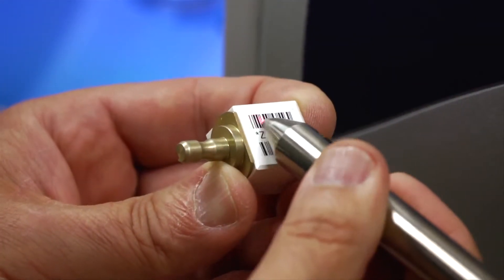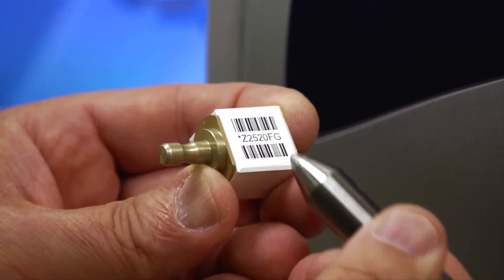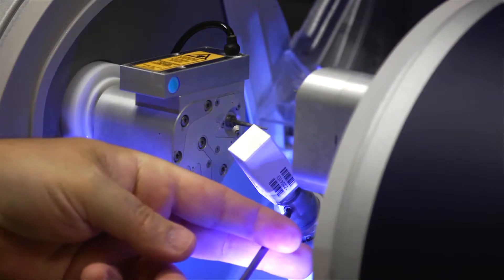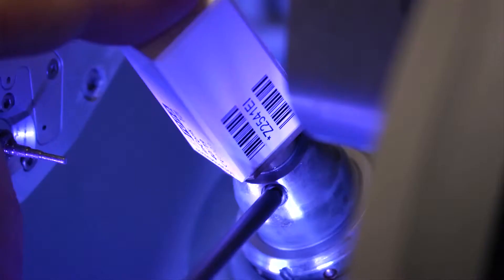Depending on your system configuration, either scan the block with the manual barcode scanner or insert block into the milling unit to use the internal barcode scanner. This will provide the milling unit with shrinkage factor information unique to the block selected.